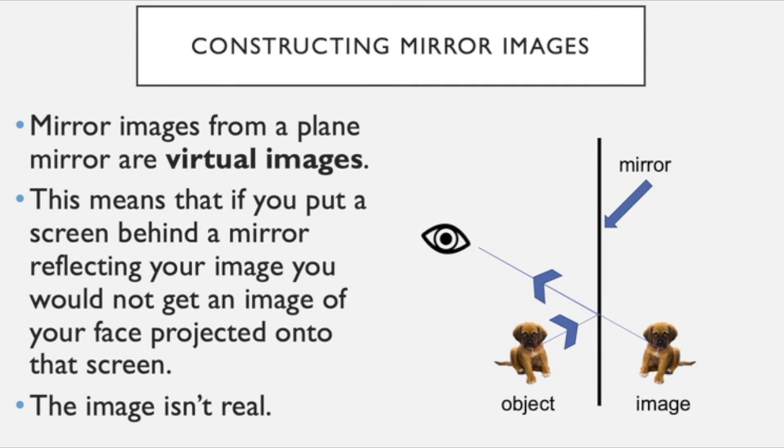So this is the difference. In a real image, you can put a screen in front of the rays of light and produce an image. There aren't actually any rays behind a mirror—it just looks like there are—and so that image is a virtual image.